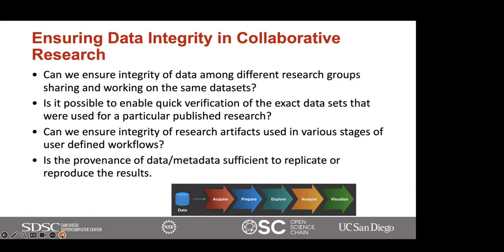We see more and more user-defined workflows, especially on the computational side. How can we ensure the integrity of the various research artifacts used in such workflows at various stages? This may not just involve the data, but also the software used, the methods, or the algorithms employed at each stage. One key aspect that often gets overlooked is the provenance of the data and the metadata that describes it. Is the information about the transformation of the data or its history sufficient to replicate and reproduce the results? Establishing a clear and comprehensive provenance is essential for building trust in collaborative research.